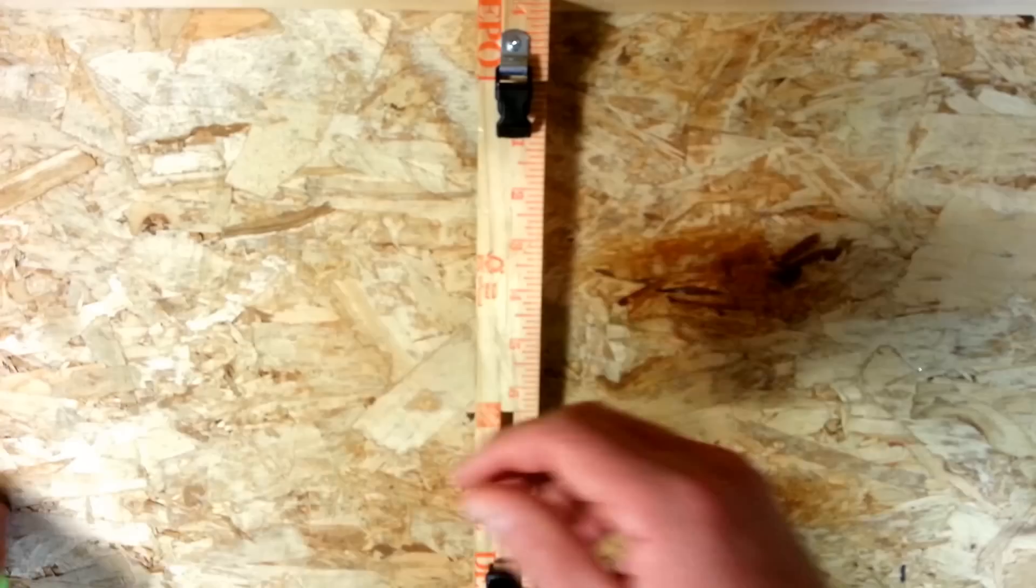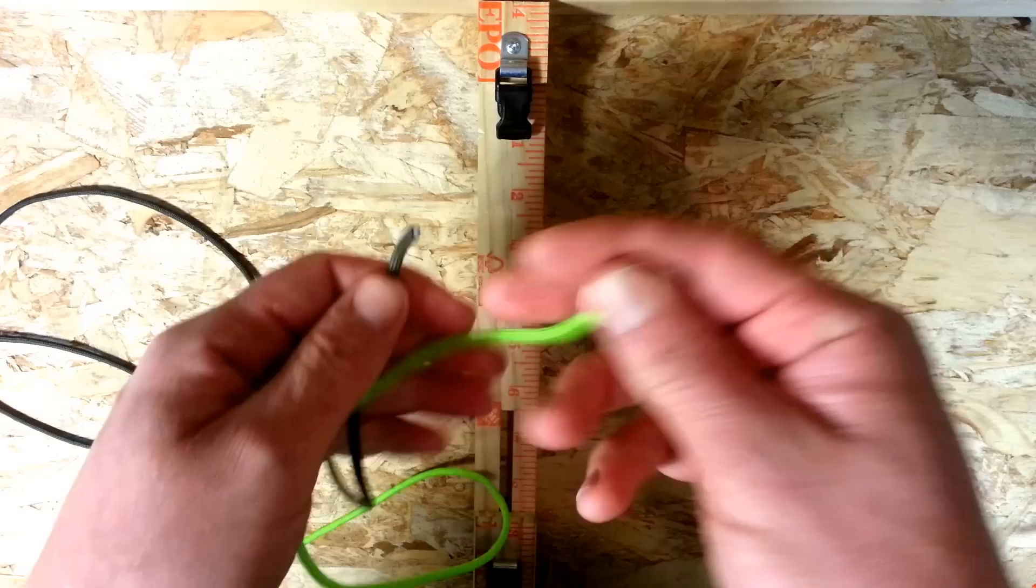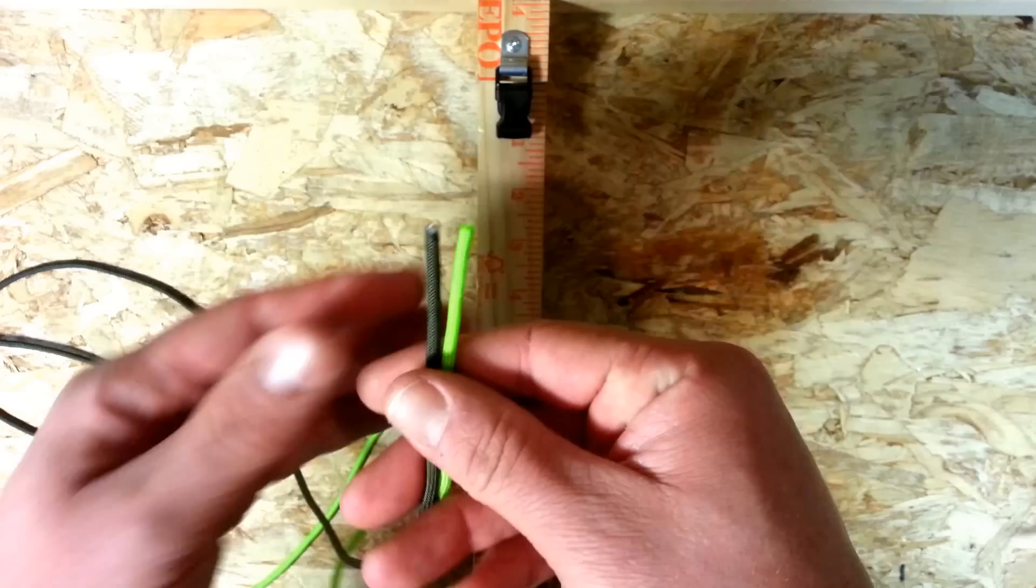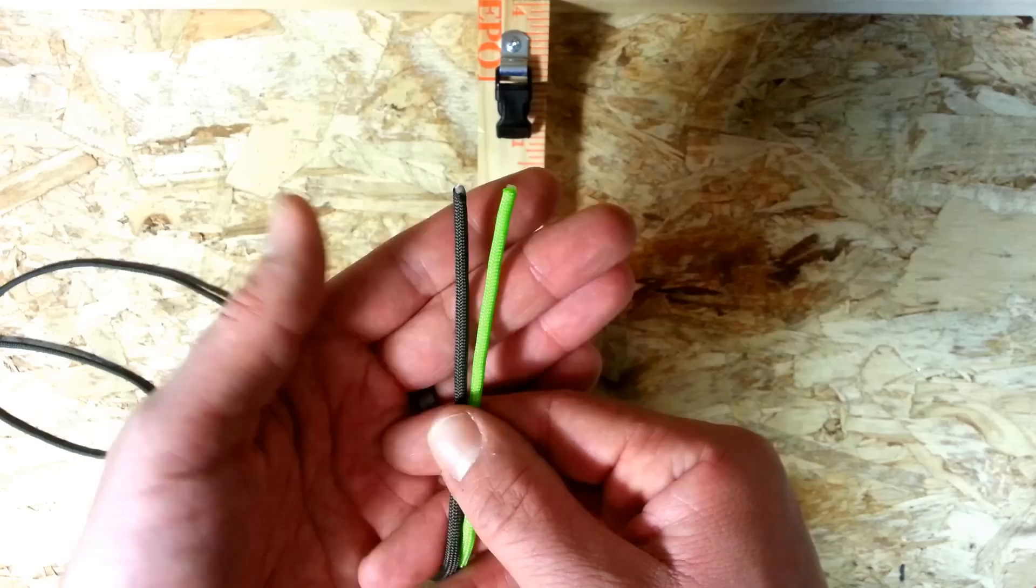Alright, so I'm using two lengths of 550 paracord, ungutted obviously, it has all the strands inside and I'm going to be making approximately an 8.5 inch bracelet which is the size for my wrist. Adjust accordingly but I would use probably 6 feet of each color which should give me a little bit of extra. So 12 feet in total. I've got a dark green here and a bright green, neon green.